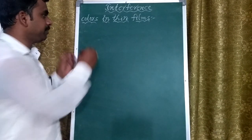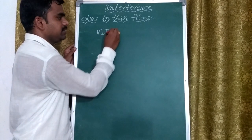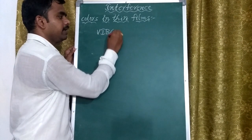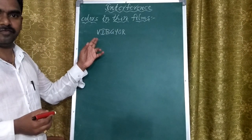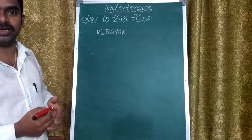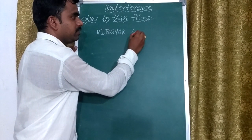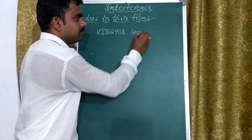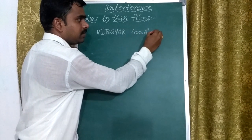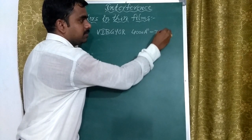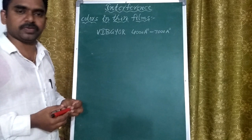White light contains all the colors: violet, indigo, blue, green, yellow, orange, and red. White light has all wavelengths across the visible spectrum, ranging from 4000 angstroms to 7000 angstroms. This range is also called the visible region.